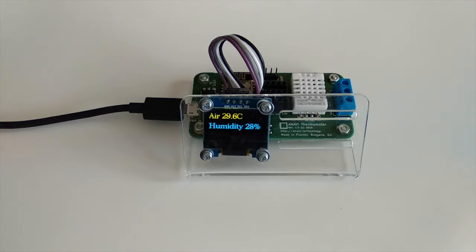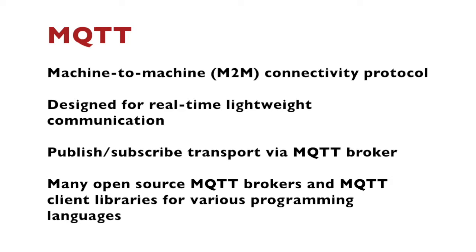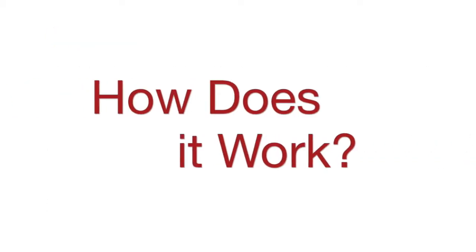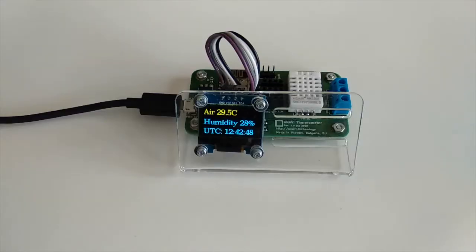My Internet of Things devices are connected to open source home automation platforms such as Home Assistant or OpenHAB using the machine-to-machine connectivity protocol MQTT. It is designed for real-time, lightweight communication with publish-subscribe transport via an MQTT broker. In this particular case, I have already installed the Mosquitto MQTT broker.